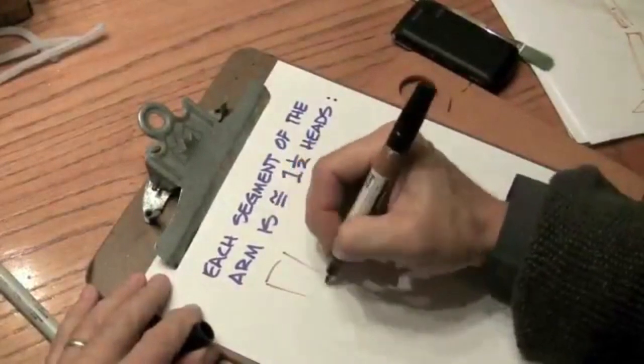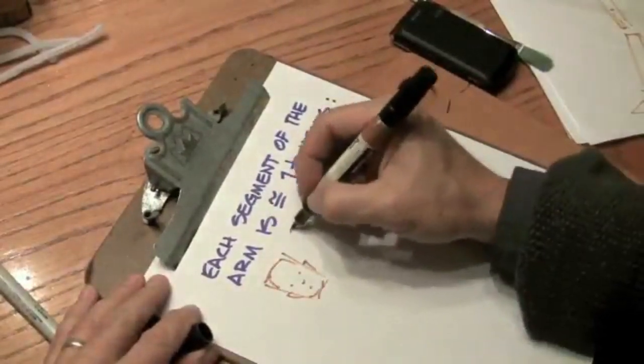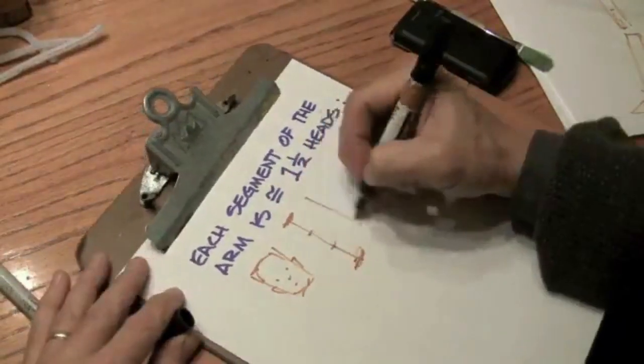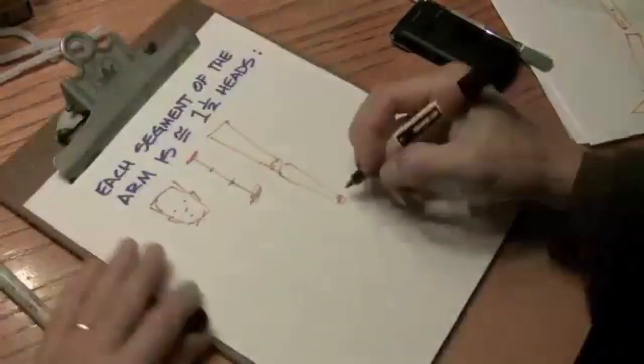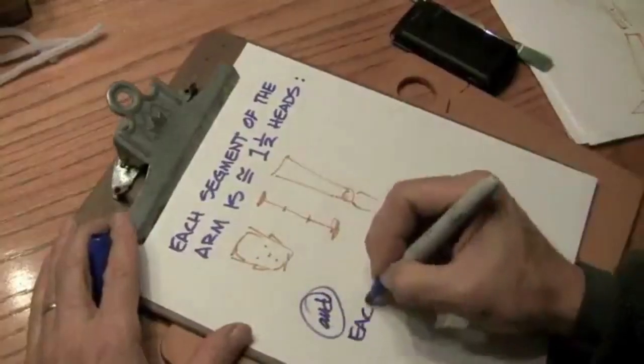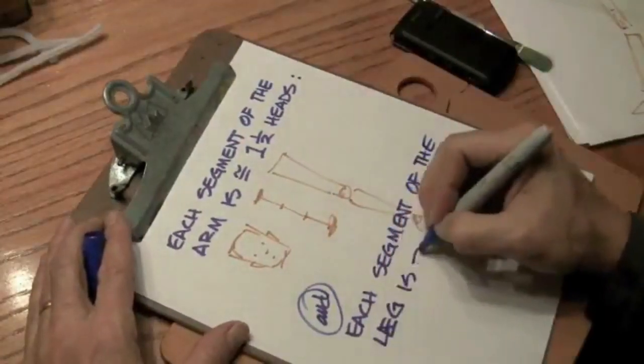Each segment of the arm is about one and a half heads long. So there's a head, that means the arm is 1.5 heads long. Each segment of the leg is about two heads long.